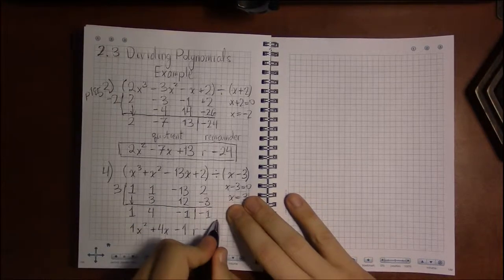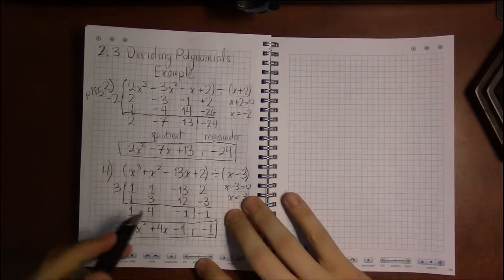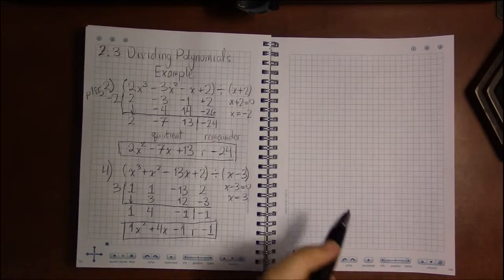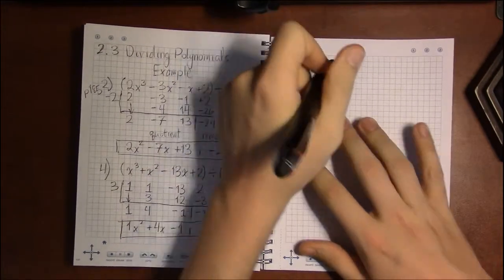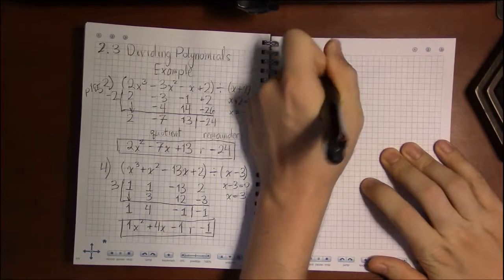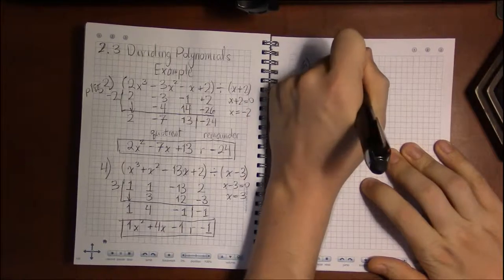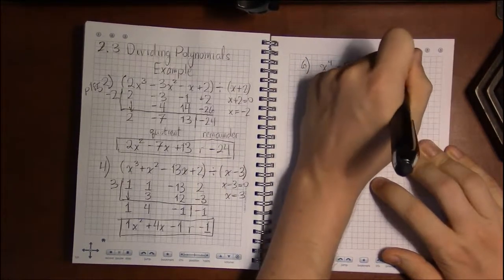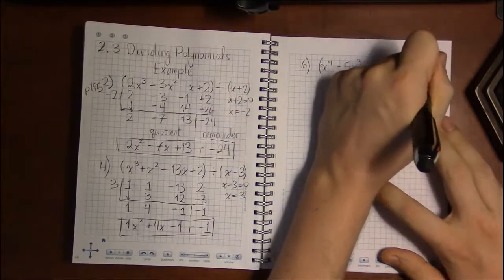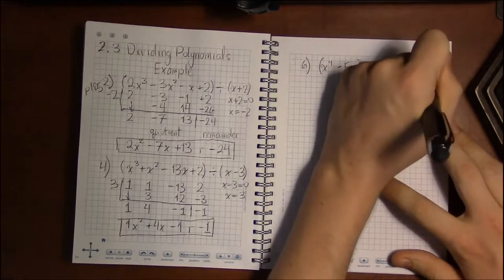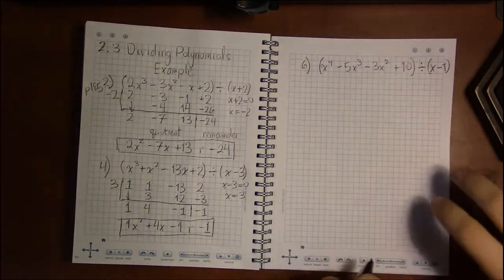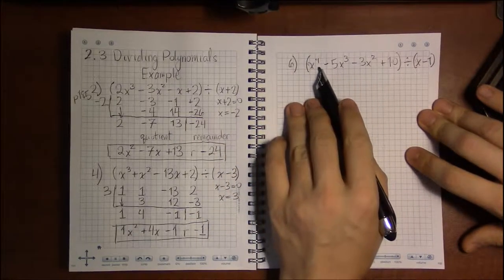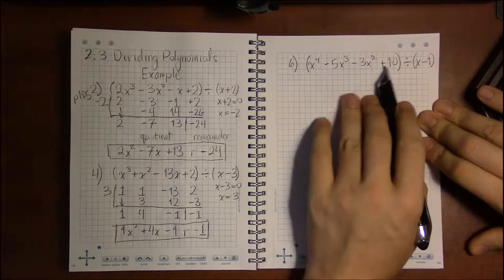That's the quotient and remainder for that division. Let's go over one more. Number 6: we're looking at x to the 4th minus 5x cubed minus 3x squared plus 10, divided by x minus 1. Now there's something special about this numerator — we've got x to the 4th, x cubed, and x squared, but there's no x term.